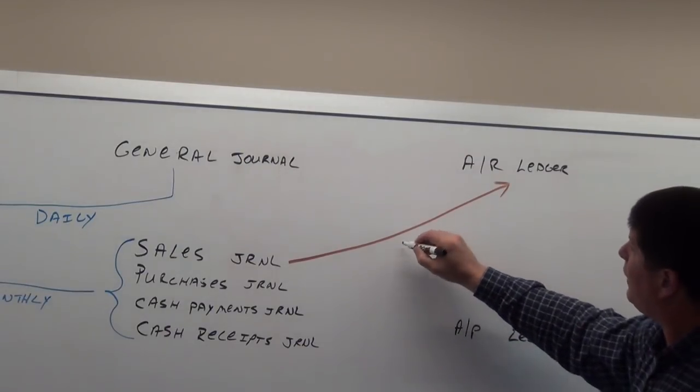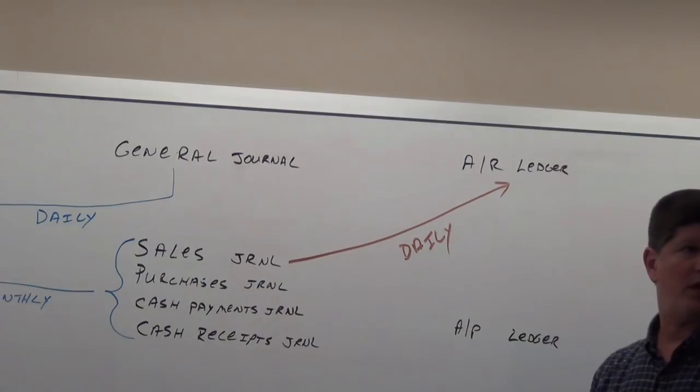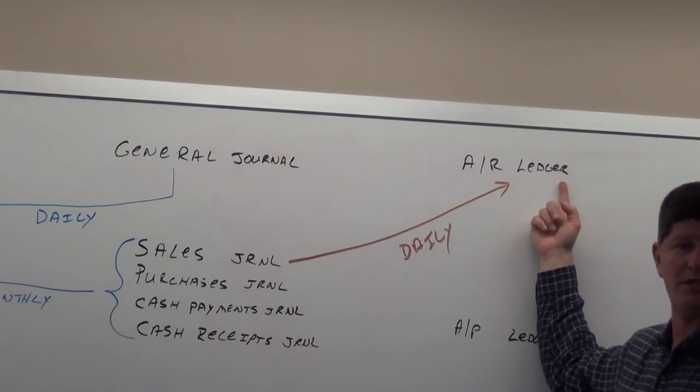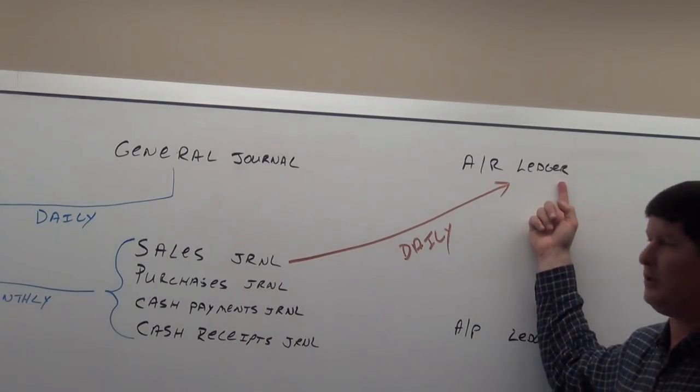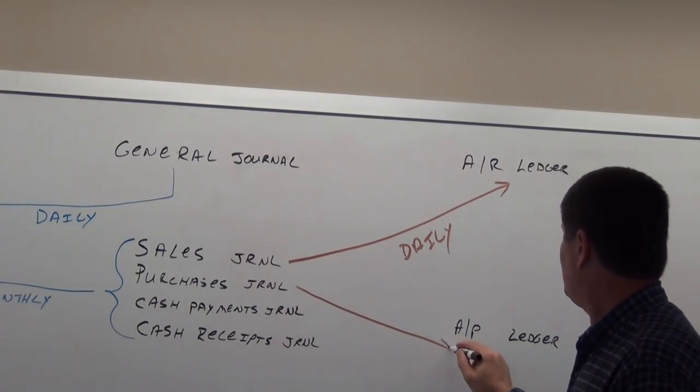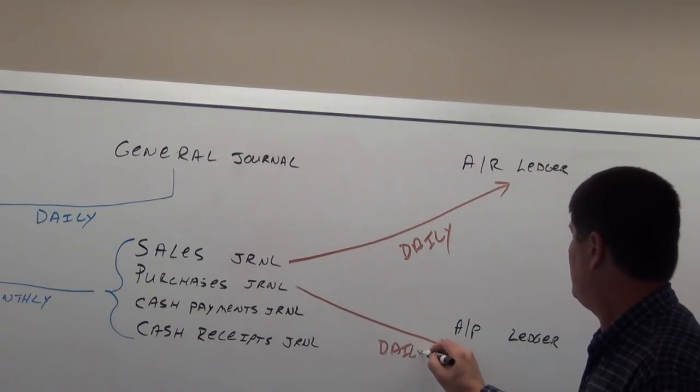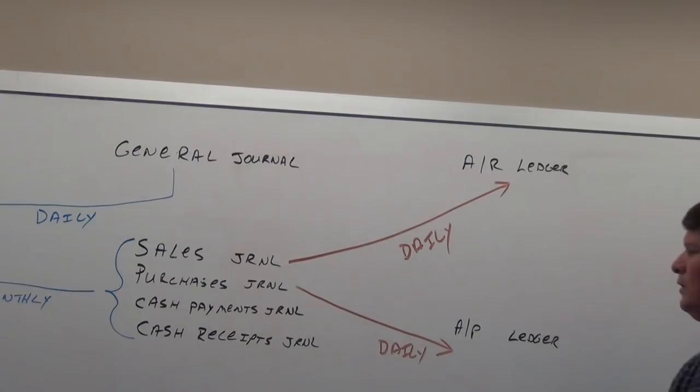So if the customer comes in and wants to make a payment, you know what his ending balance is at that moment. If you make a purchase you're going to post that every day to the accounts payable ledger so that we know how much we owe each vendor.